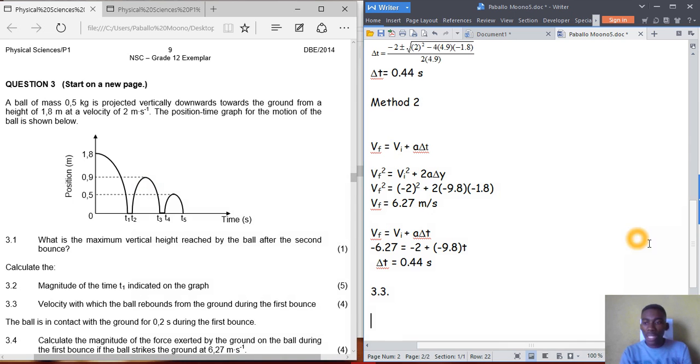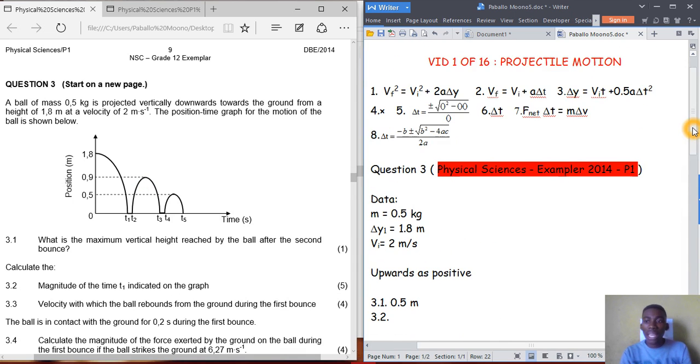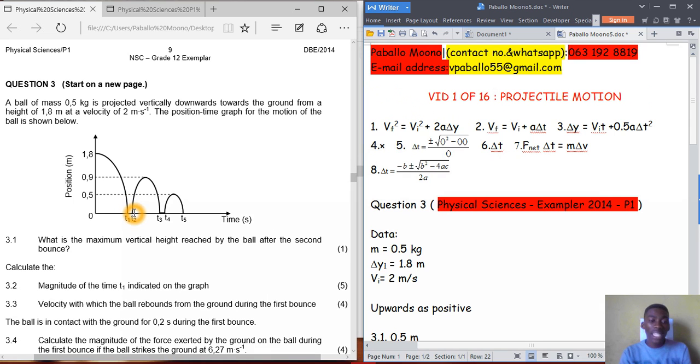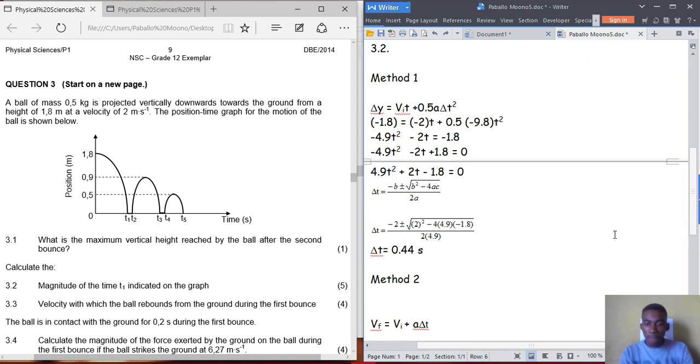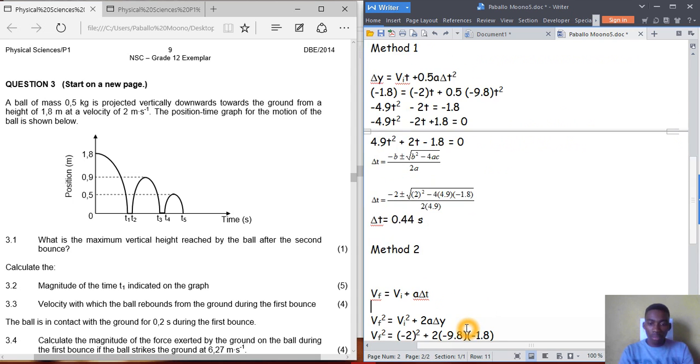So which equation should we use? Initial velocity is what we need to find. We know the final velocity is 0 at the turning point. Equation number 2 has time in it, but we don't have time. Equation at the turning point, equation number 3 also has time. So the only option is equation number 1.